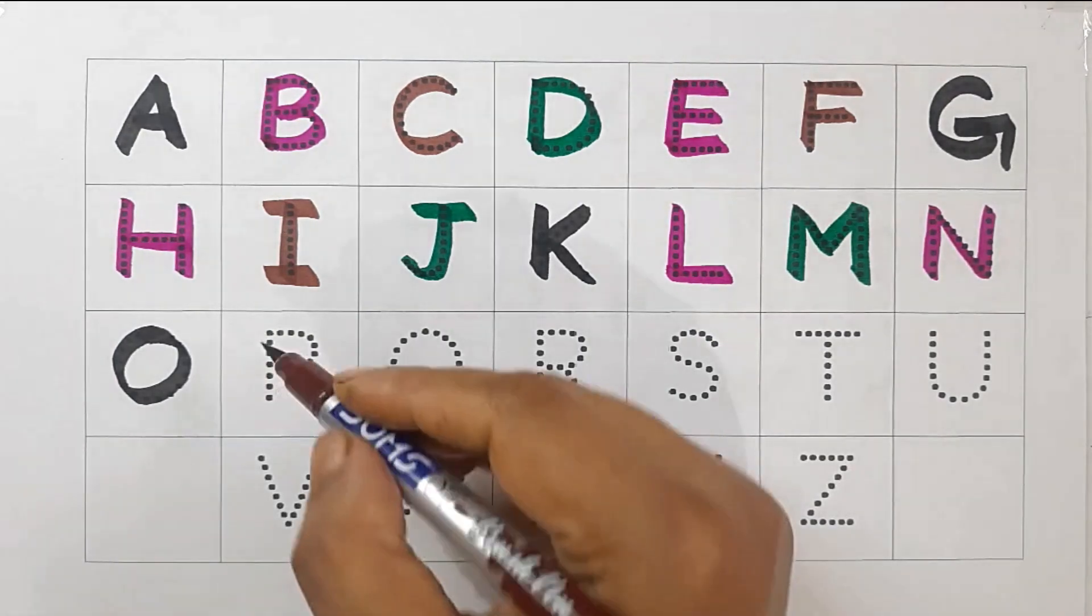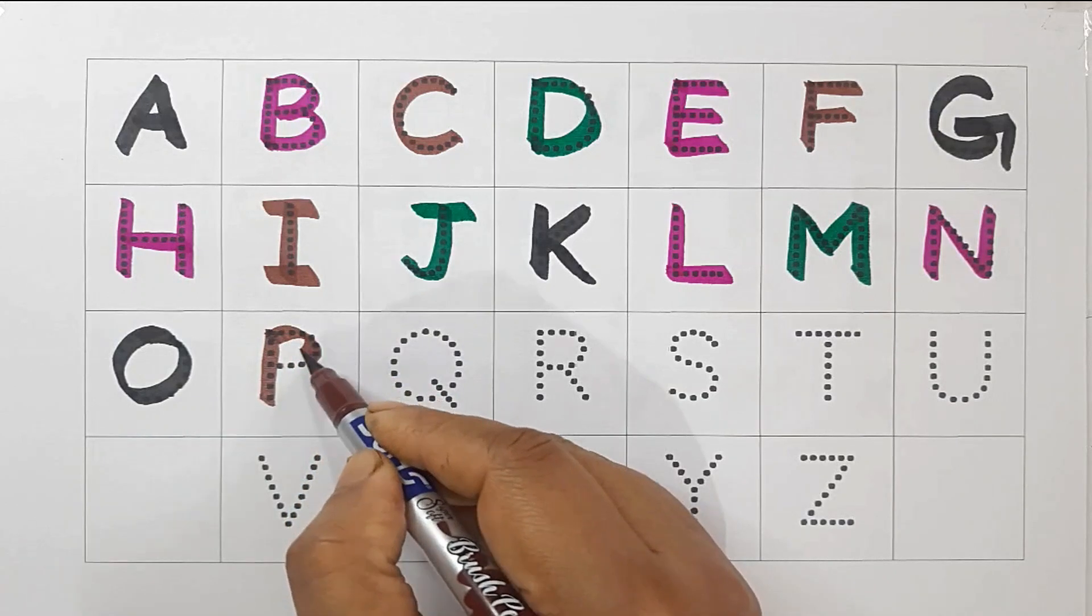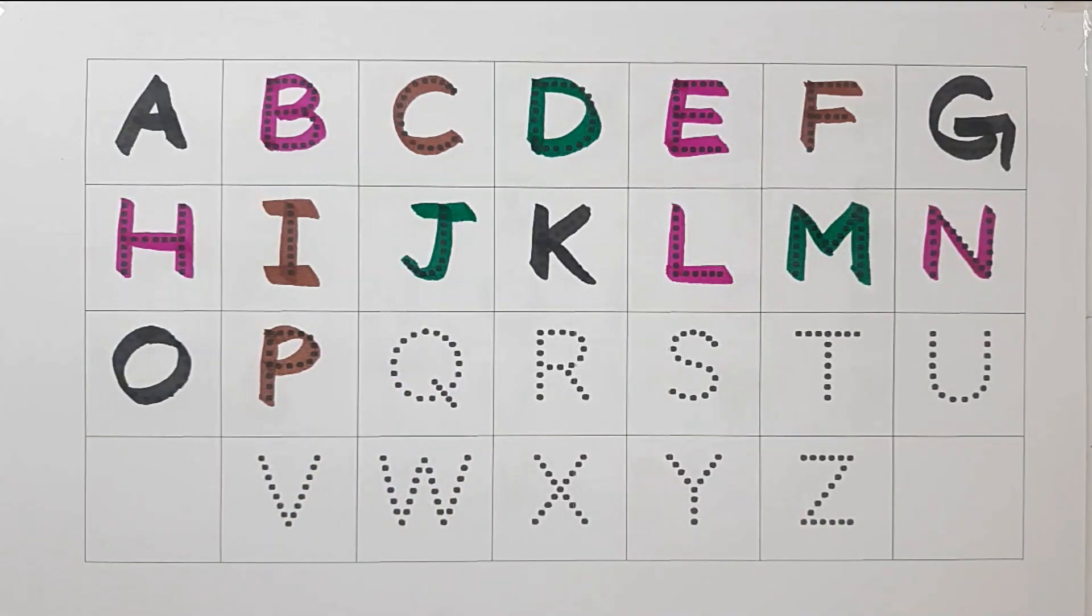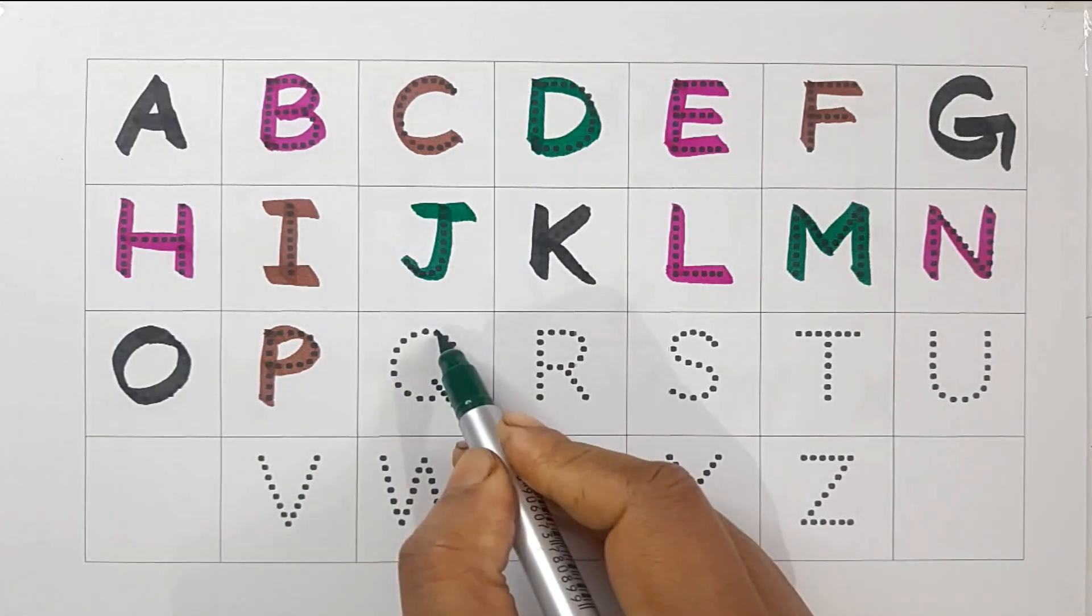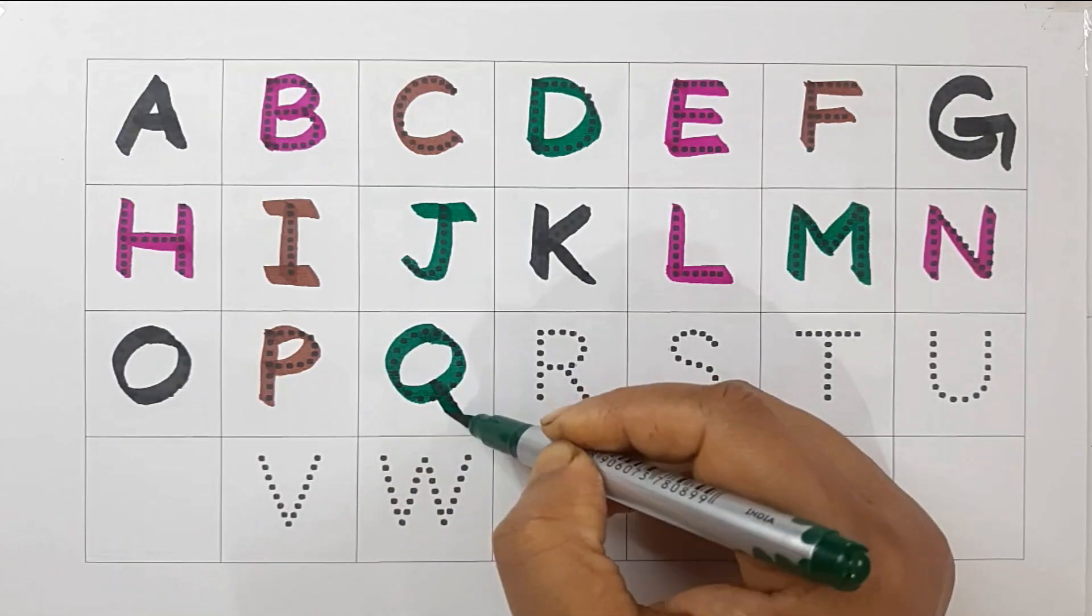Brown color, P, P for peacock. Green color, Q, Q for queen.